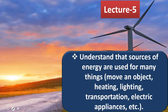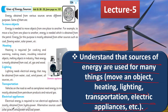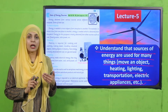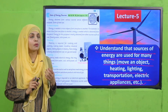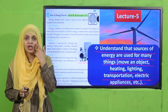In Lecture Number 5, students will be able to understand that sources of energy are used for many things: moving an object, heating, lighting, transportation, electric appliances, and more. Different energy sources are used for different kinds of work — for different appliances and different non-living things. This will be discussed in Lecture Number 5 on page number 124.